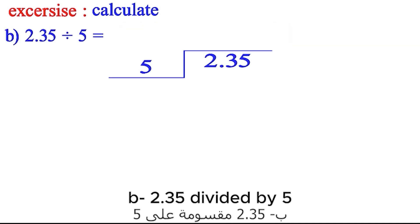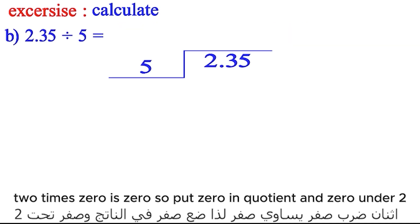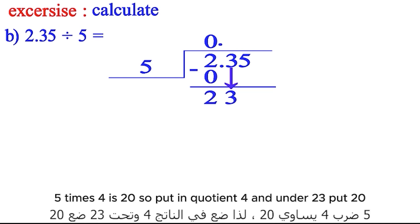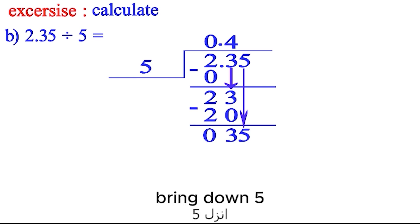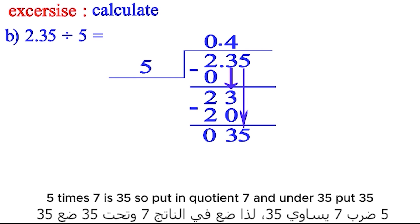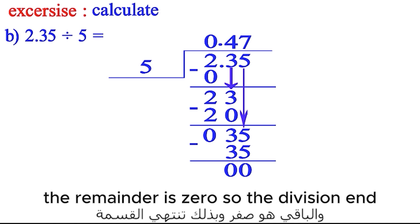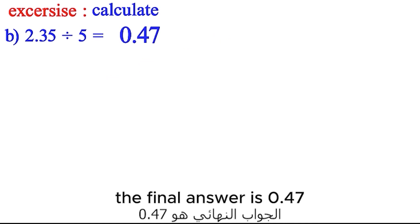E) 0.35 divided by 5. 2 times 0 is 0, so put 0 in the quotient and 0 under 2. Subtract them. Put dot. Bring down 3. 5 times 4 is 20, so put in the quotient 4 and under 23 put 20. Subtract them. Bring down 5. 5 times 7 is 35, so put in the quotient 7 and under 35 put 35. Subtract them. The remainder is 0, so the division ends. The final answer is 0.47.